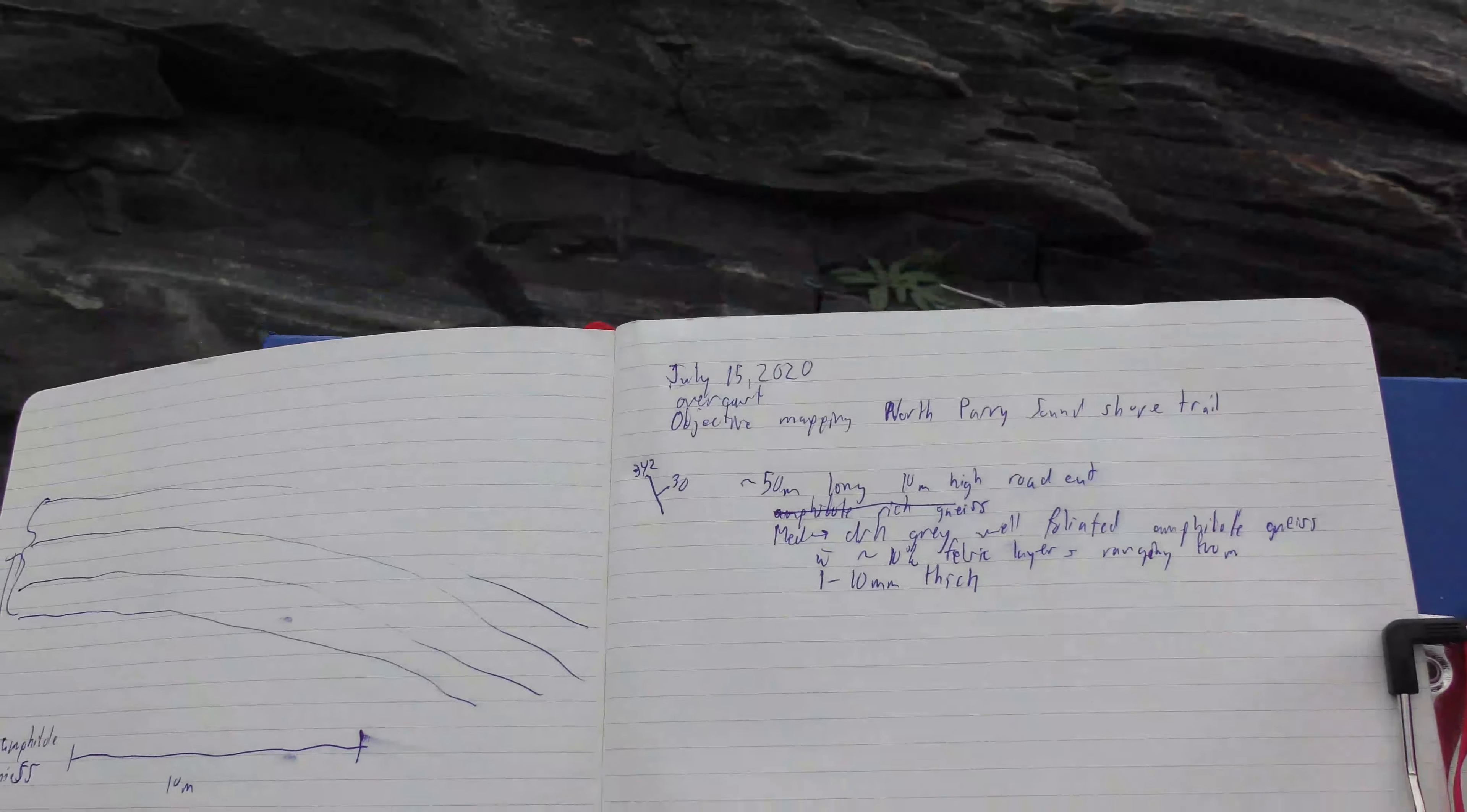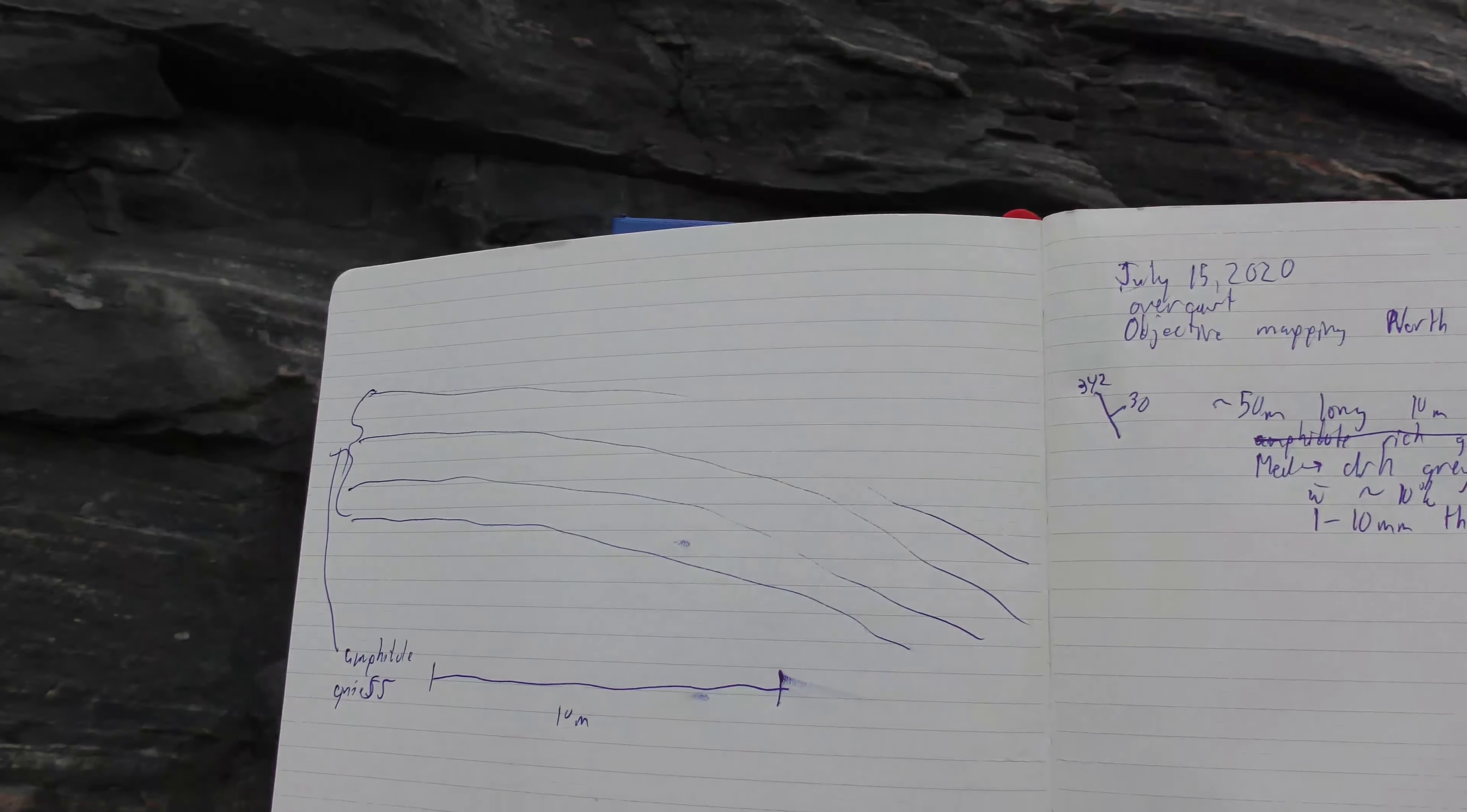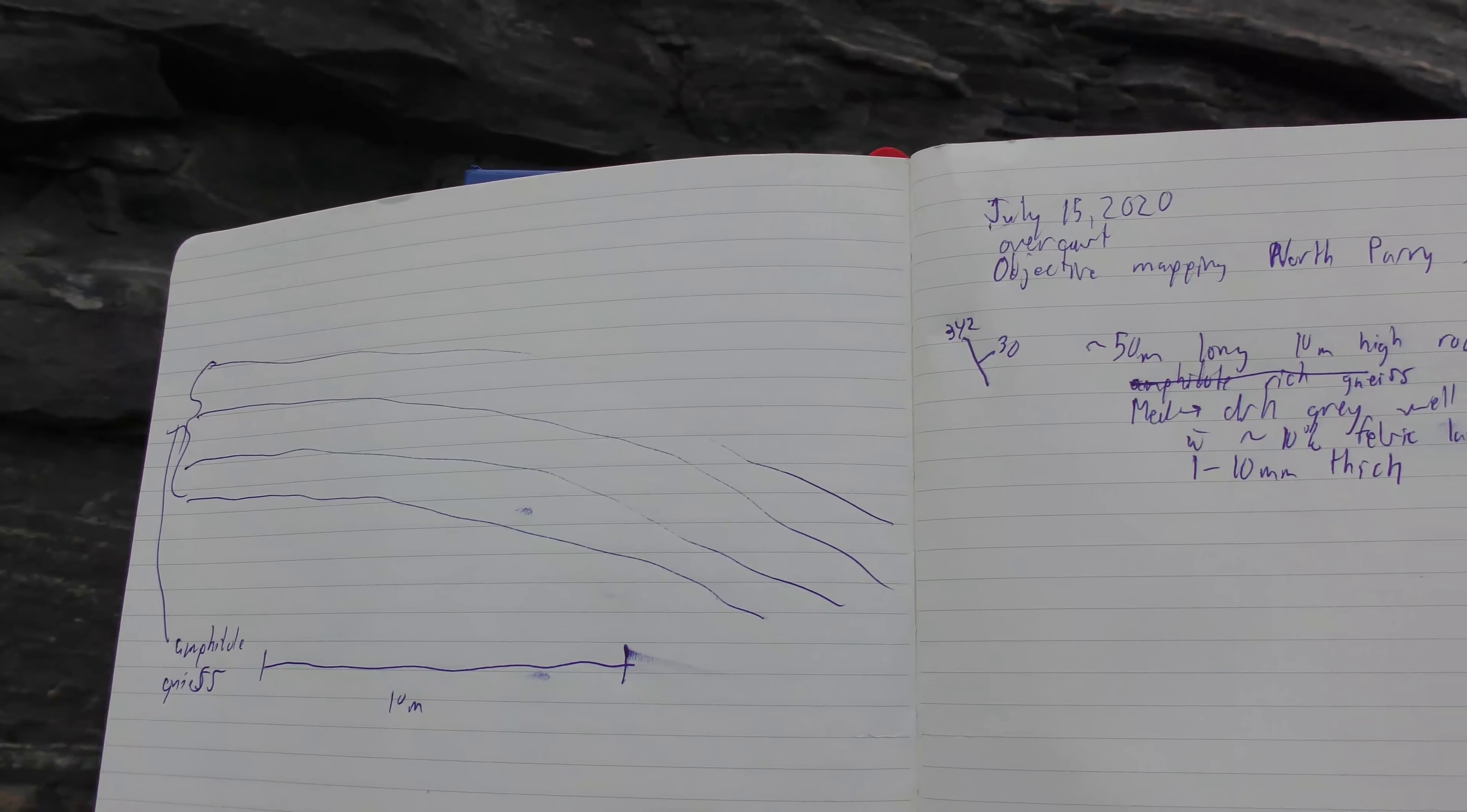This is how I like to do it: have my notes on the right hand side, draw out the structure like this rather than just putting in the number, just in case you're not doing right hand rule correctly, and then do a quick sketch of the outcrop.